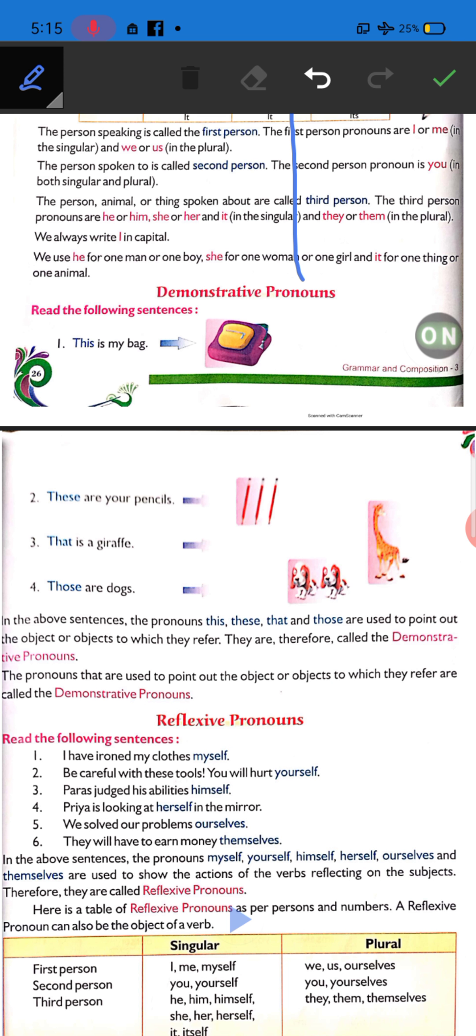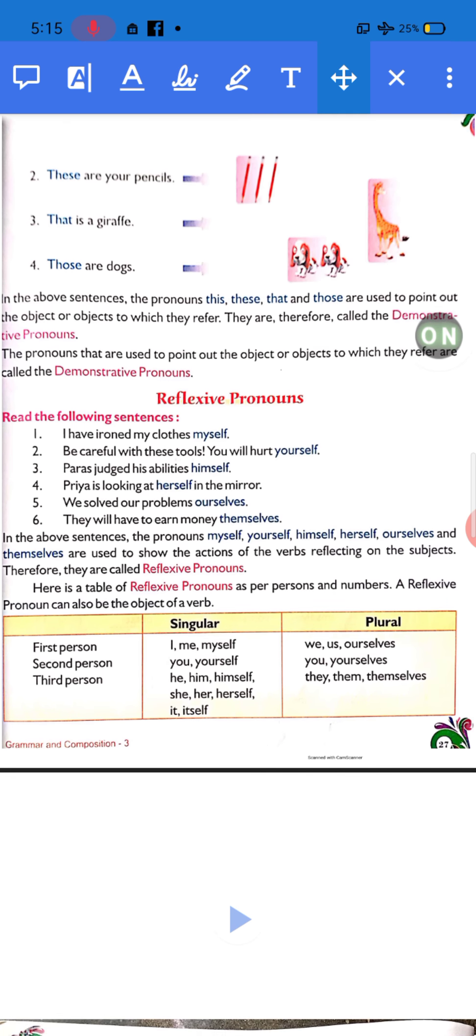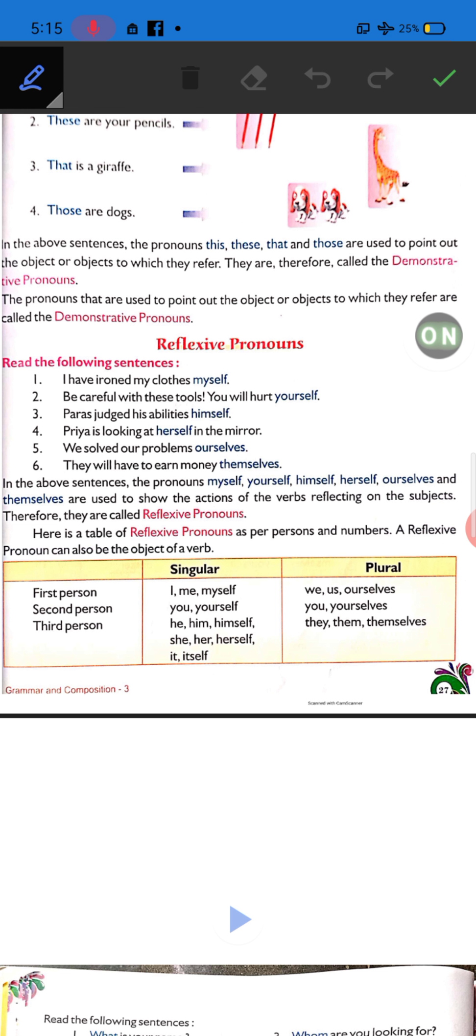Reflexive pronouns. Reflexive pronouns are used to show the action or work reflecting on that subject. The action is shown to reflect back on the subject. If I is the subject, then you use myself. For example, first sentence: I have ironed my clothes myself. This means I ironed my clothes on my own.